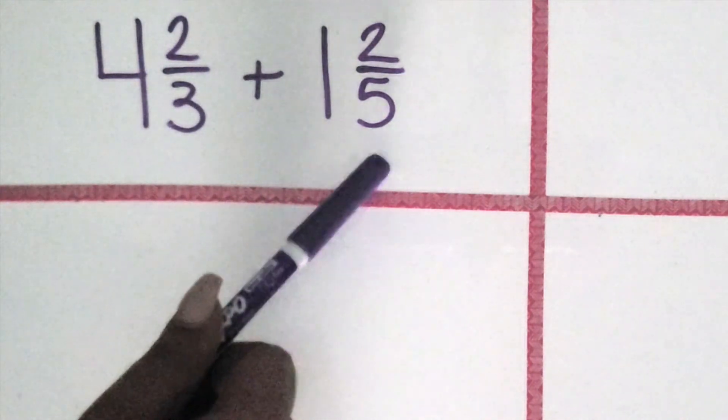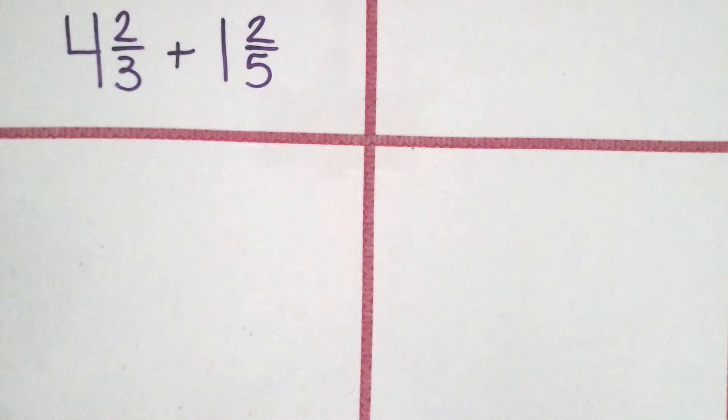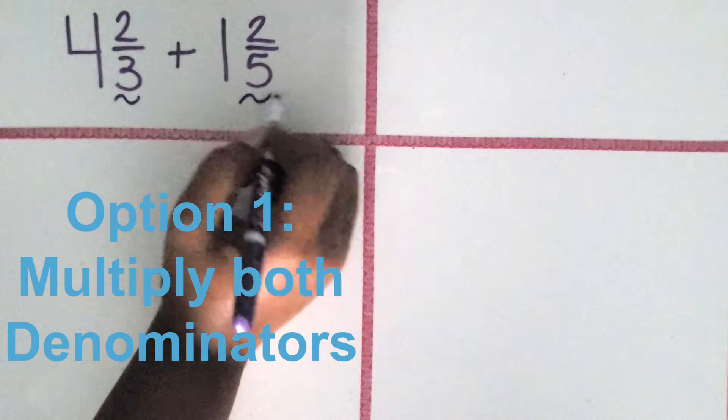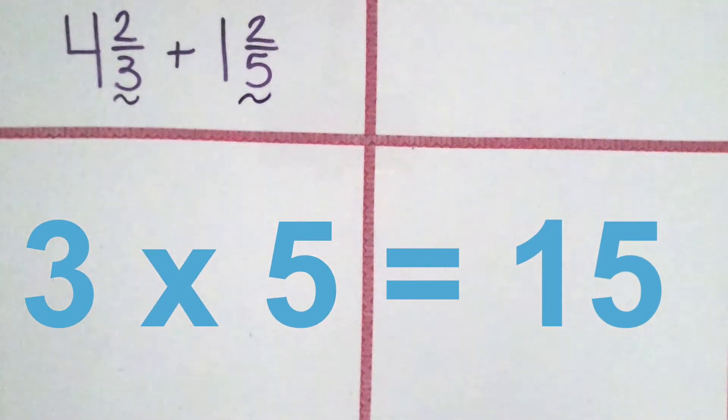We want equivalent fractions to both original fractions that have the same denominators. We could multiply the two denominators together to find a like denominator. Multiplying 3 and 5 creates a product of 15.